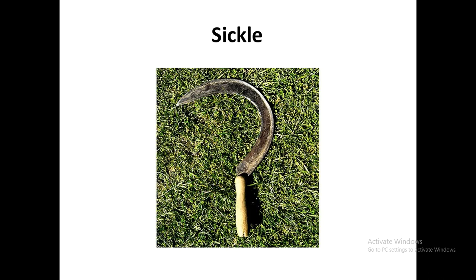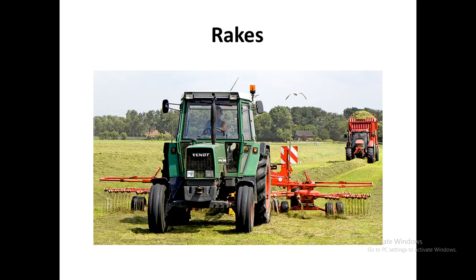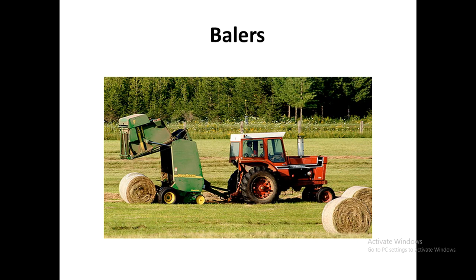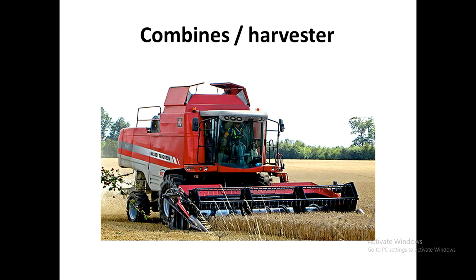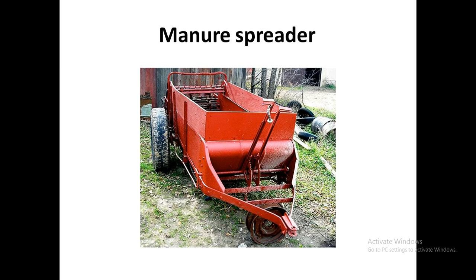A sickle is generally used for harvesting crops and also for cutting vegetables or fruits from trees. Rakes are used for gathering straw or hay in the field after harvesting. Balers are used for bundling straw or hay in the field after harvesting. A combine harvester is a machine used for both harvesting and threshing the grain from the stalk together, whereas a harvester alone only harvests and threshing is done separately. The manure spreader is used for spreading manure in the field and can be tractor-drawn or animal-drawn.